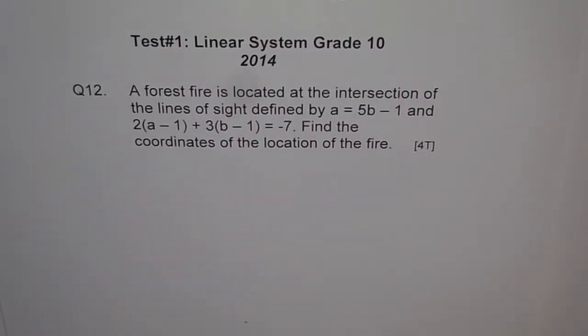Question 12. A forest fire is located at the intersection of the lines of sight defined by A equals 5B minus 1 and 2 times A minus 1 plus 3 times B minus 1 equals minus 7. Find the coordinates of the location of the fire.